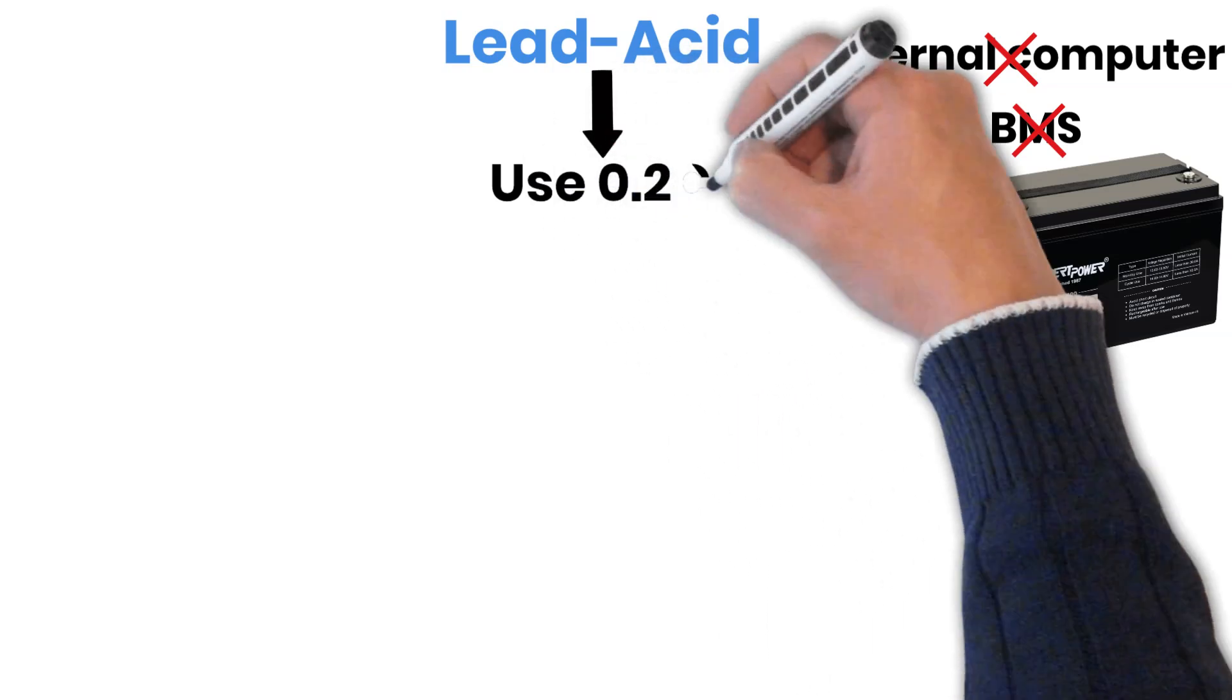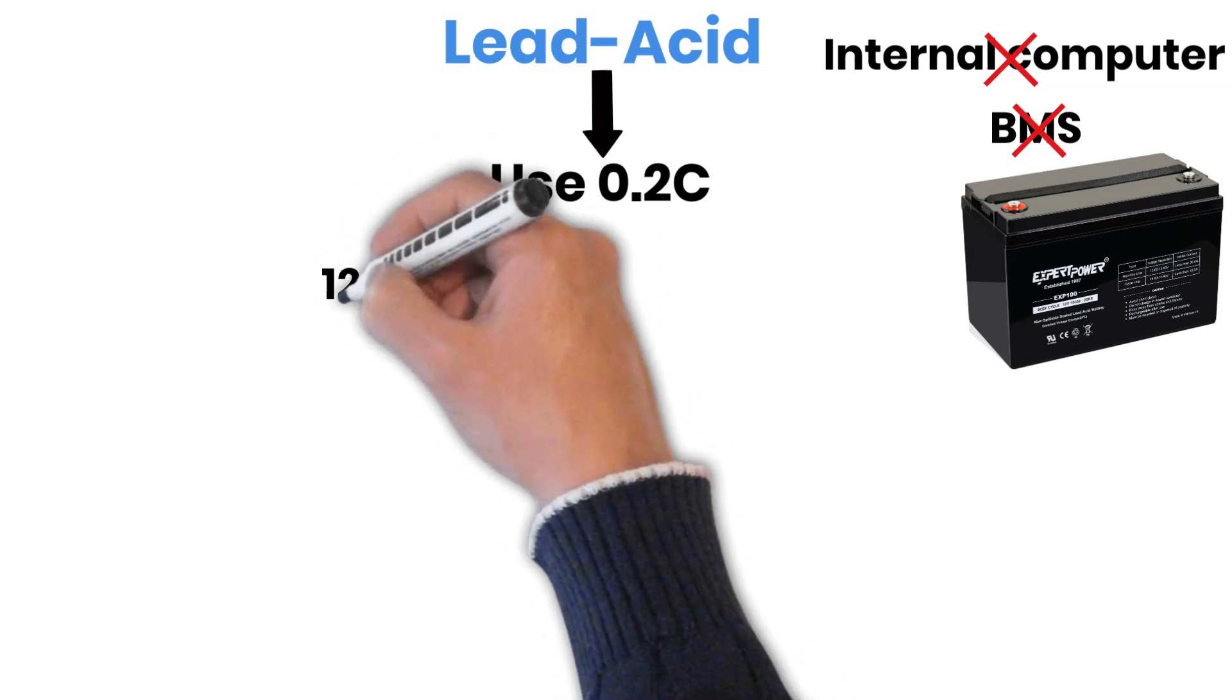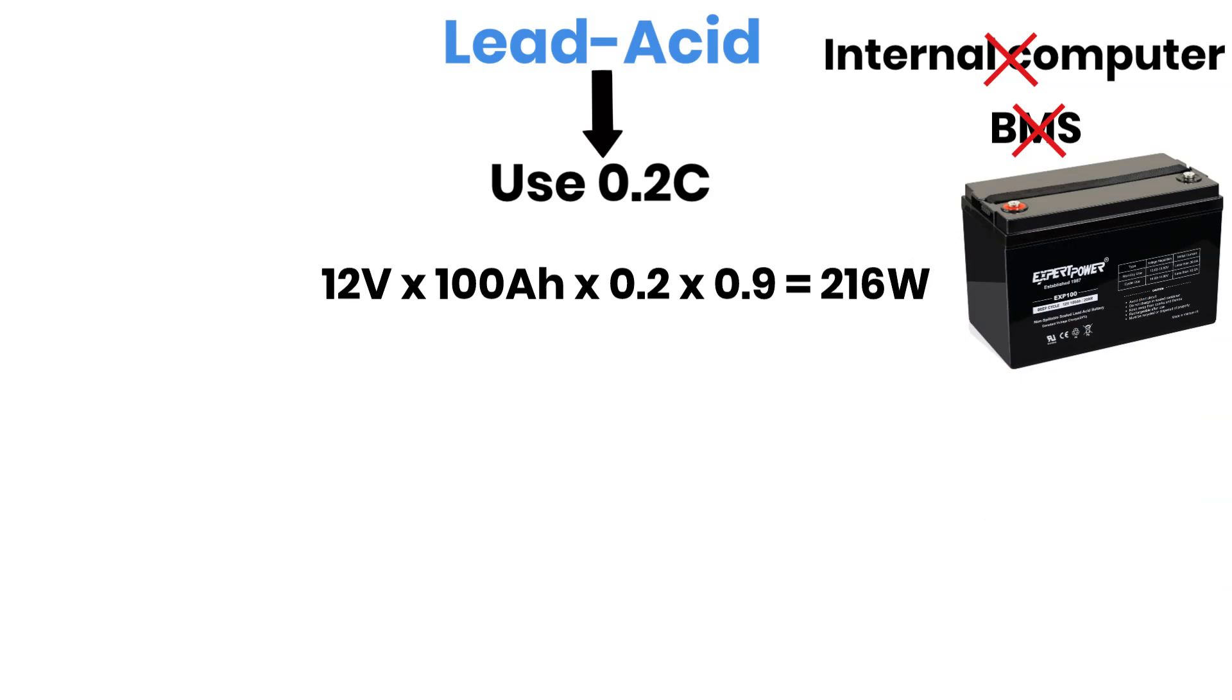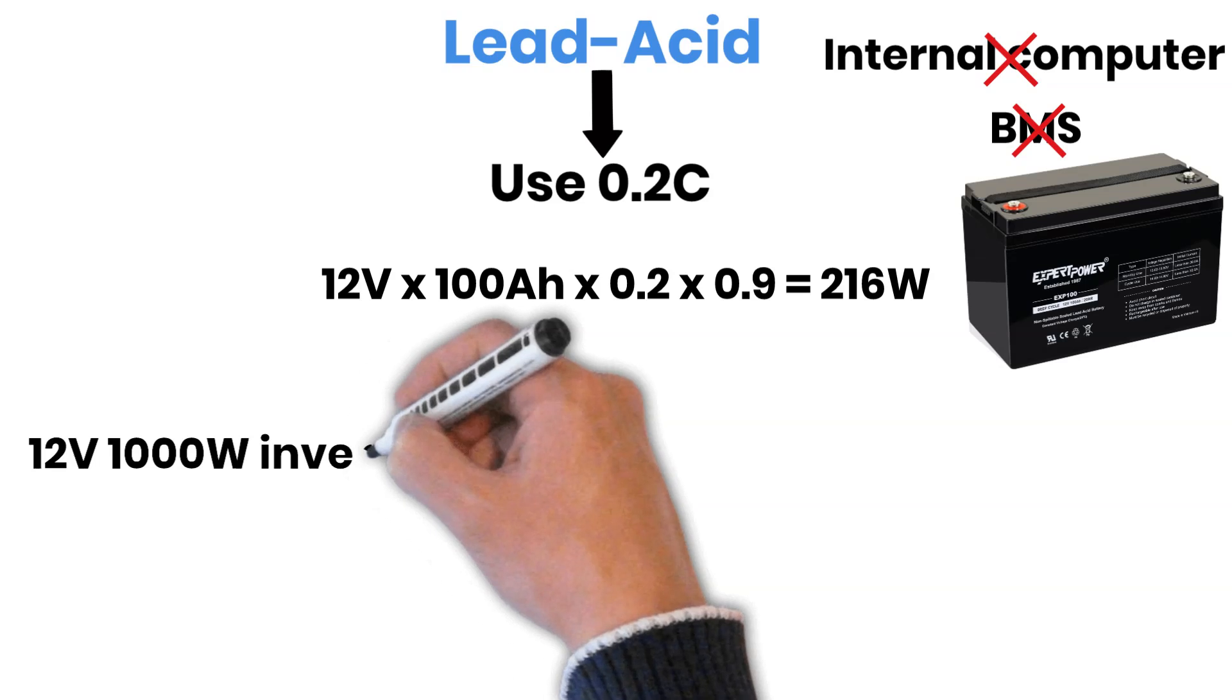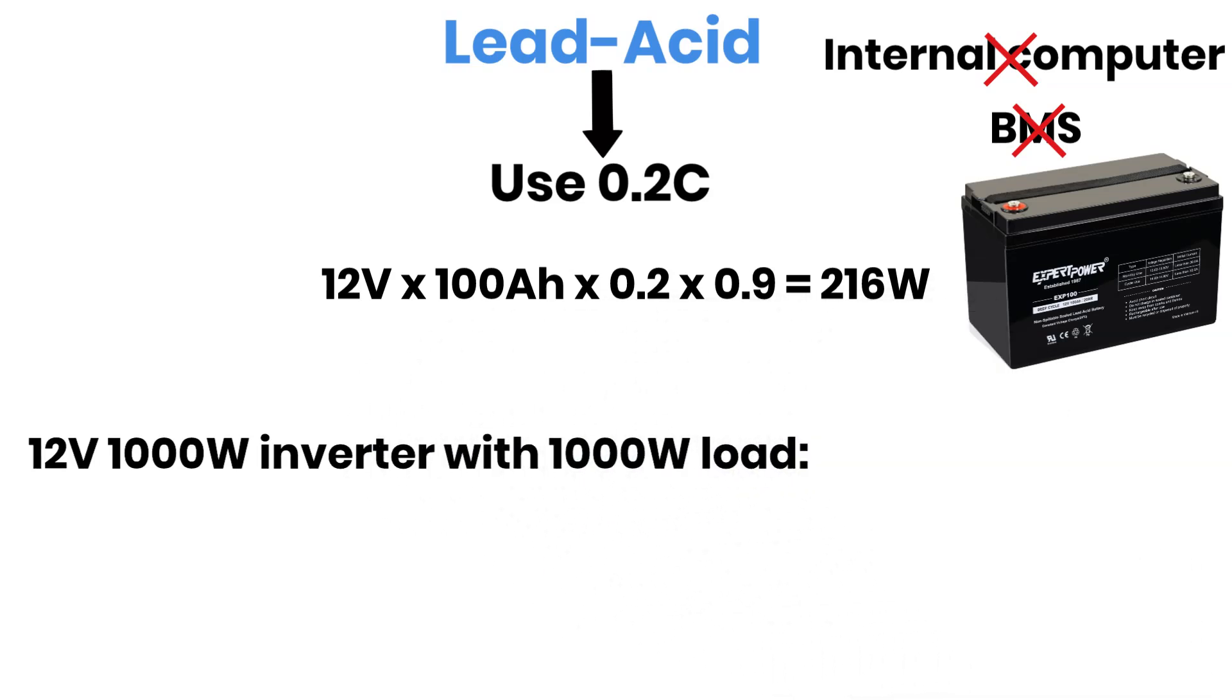To keep things safe, a good rule is to stay around a C-rate of 0.2, which means roughly 200 watts of power per 100 amp hour battery. Now, let's say you want to run a 12 volt, 1,000 watt inverter with a 1,000 watt load. A single 100 amp hour lead acid battery won't handle that by itself. It'll need help. You'd need to connect about five 12 volt lead acid batteries in parallel, giving you a total of 12 volts, 500 amp hours.